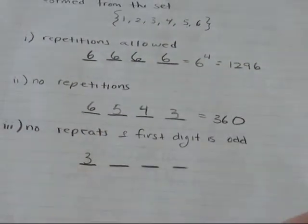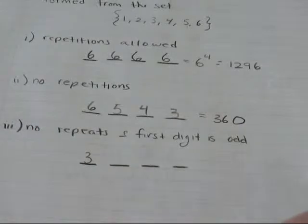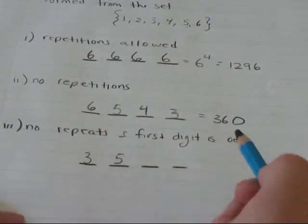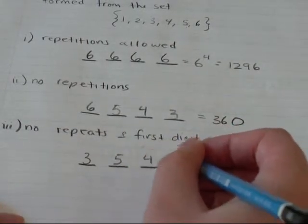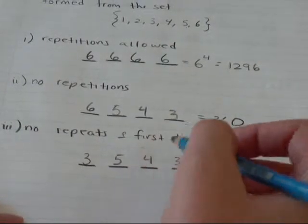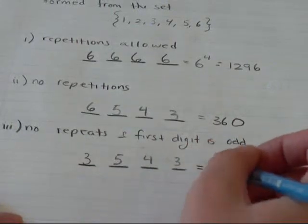I'm only using one of those three for my first digit. And there's no repeats, so I have 5 to choose from, and then 4 and 3. 3 times 5 times 4 times 3 equals 180.